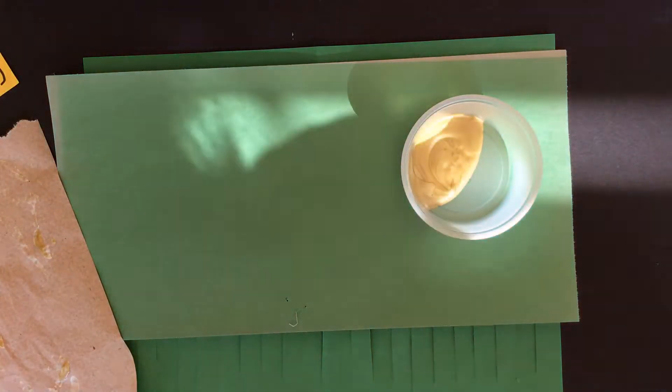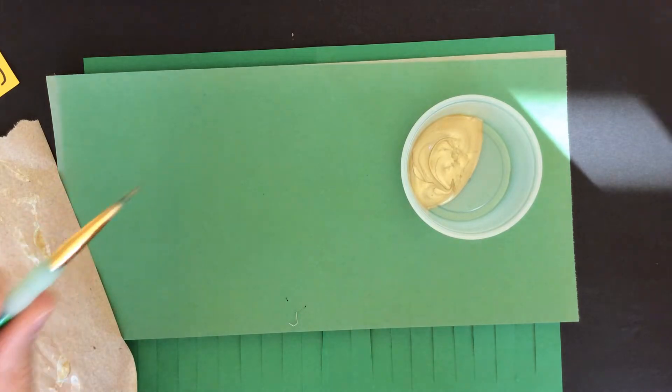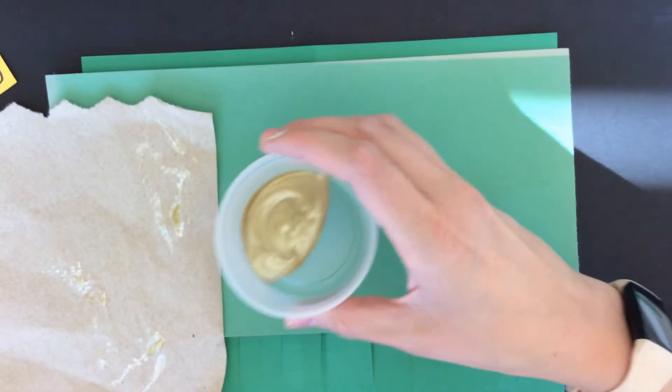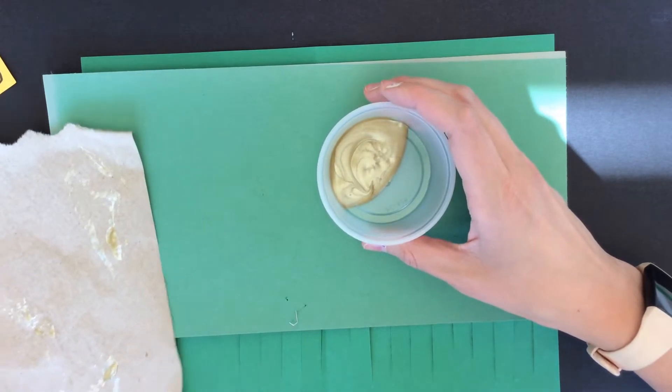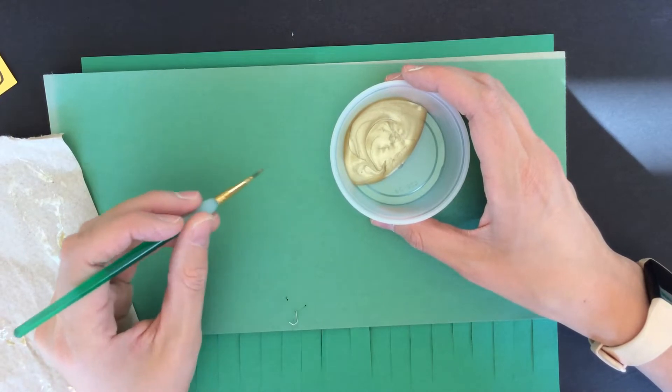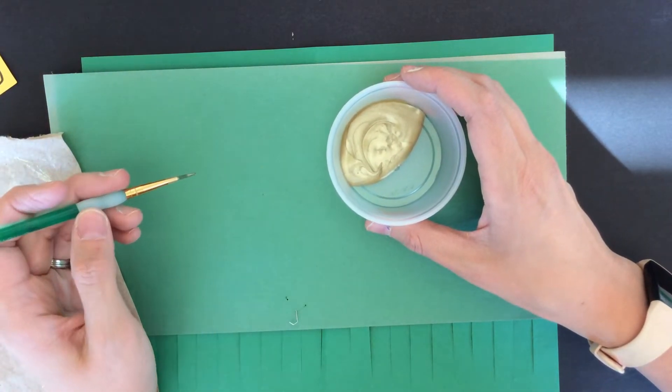First of all, make sure that you have a small detail brush. A detail brush is a little skinny brush, a paper towel, and your paint. First, I'm going to show you how to use the brush on a regular piece of paper, and then I'll show you how we're going to do it on our lantern.